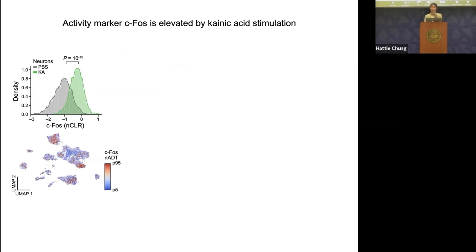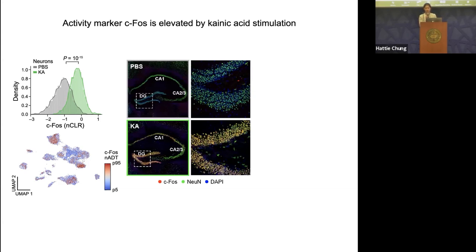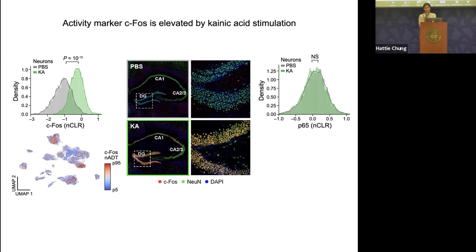The fourth protein was CFOS, a well-known activity marker used as a handle for neural activity — neurons that fire are known to express elevated CFOS in the nucleus. Separating CFOS levels by PBS-treated versus kynic-acid-stimulated mice, we see a significant increase in CFOS protein expression. The CFOS protein shows widespread expression across different cell types, and we validated this by immunofluorescence showing highly elevated CFOS levels in the dentate gyrus after kynic acid injection. Conversely, P65 — another activity-regulated transcription factor — did not change in neurons at this timescale.